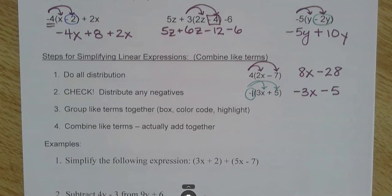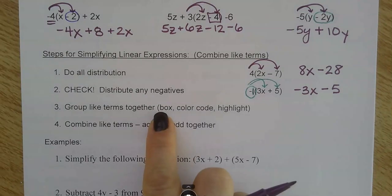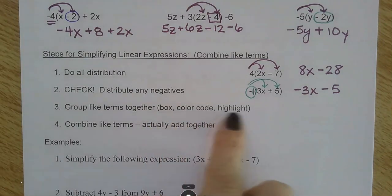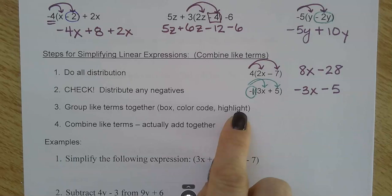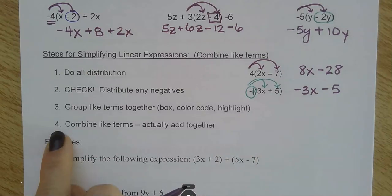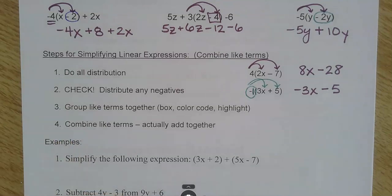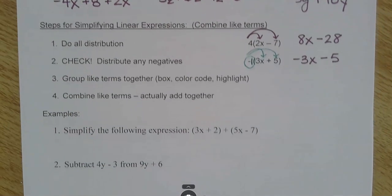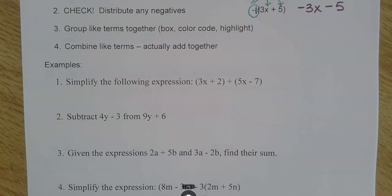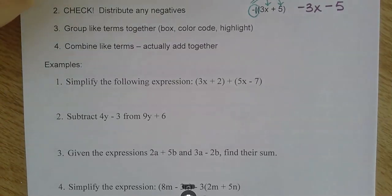Number three: then you're ready to box, color code, or highlight — however you like to find your like terms — and then actually combine those like terms and put them together. I'm going to do five examples, and then you're going to flip it over and do five problems just like these for practice. Here we go.